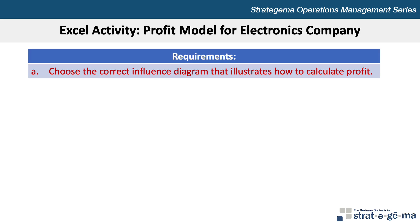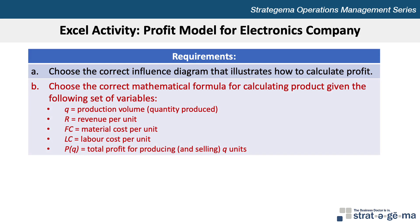Requirement A asks us to choose the correct influence diagram that illustrates how to calculate profit. Requirement B asks us to choose the correct mathematical formula for calculating profit, where Q is production volume, R is revenue per unit, FC is fixed production cost, MC is material cost per unit, LC is labor cost per unit, and PQ is total profit for producing and selling Q units.